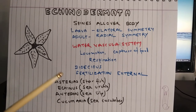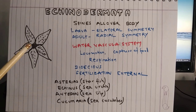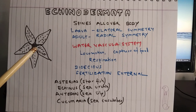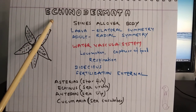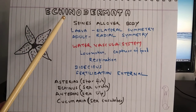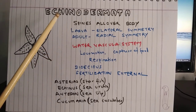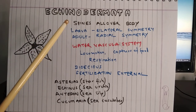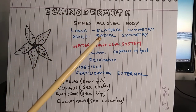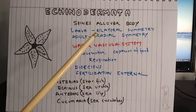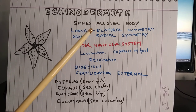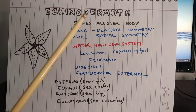Hi, this is Ajay Anand and welcome to science classes from excelup.com. In this lesson you will learn about the key features of phylum Echinodermata, taken from class 11th biology. These animals have spines all over the body, and that is how the name Echinodermata has been given — dermata comes from dermis, that is skin.